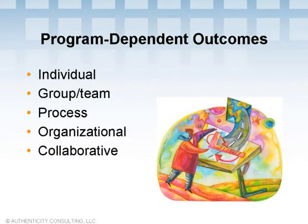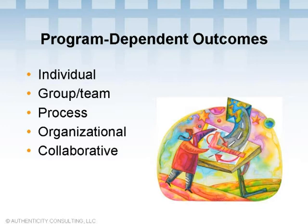There are various levels of program-dependent outcomes. Individual outcomes can also be program-dependent if emphasized even more in a program — for example, if a program is designed to solve an organizational problem, it might also emphasize individual problem-solving skills. Group or team outcomes might include team problem-solving, decision-making, and skills in presenting and facilitating. Process outcomes usually span several departments, such as product development and quality improvement. Organizational outcomes might include solving a complex problem, changing the culture, or cultivating a learning organization. Collaborative outcomes might include developing capabilities for mutual visioning and networking among several organizations, or gathering collaborators and vendors to optimize the value chain.